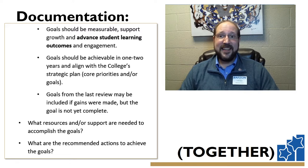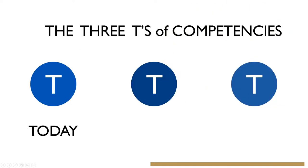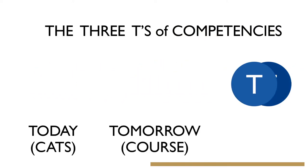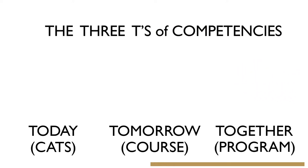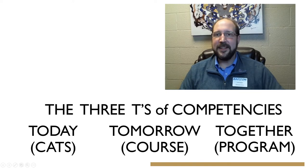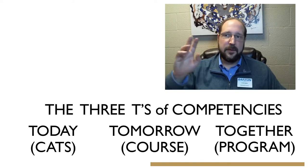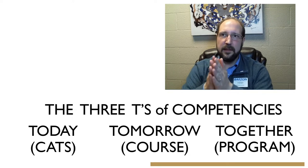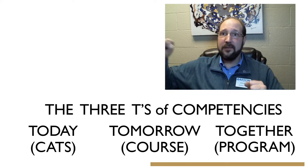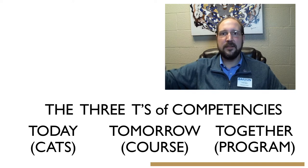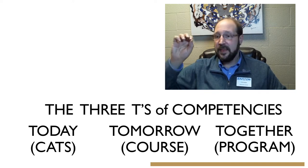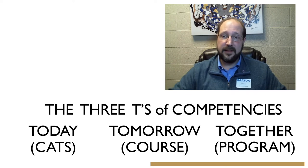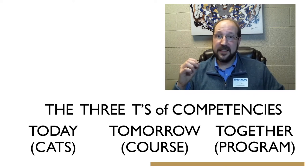So as you saw here, that concludes the three T's of competencies. Today, CATS. Tomorrow is course. And now, finally, together — program. The three T's of competencies. Today was CATS — what do we do on a day-to-day basis? We work with our students hand in hand to help them improve and learn as they struggle. Then we let them go — they've got to do it on their own now. That's course. And finally, together is program — how do all these courses work together to meet a program learning outcome that will make them employable and successful in life.